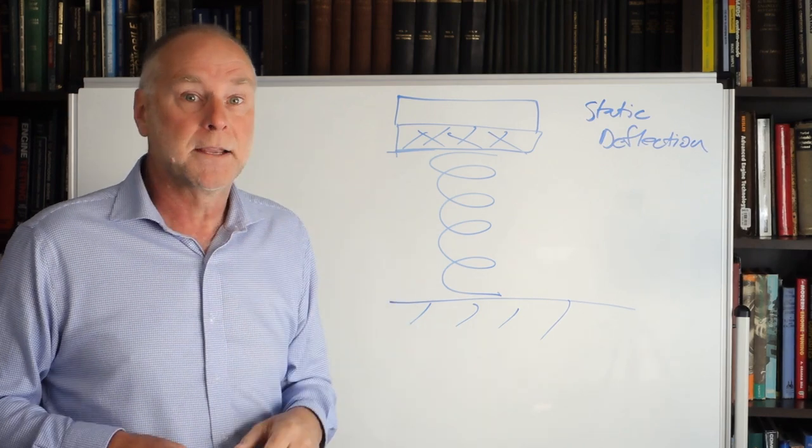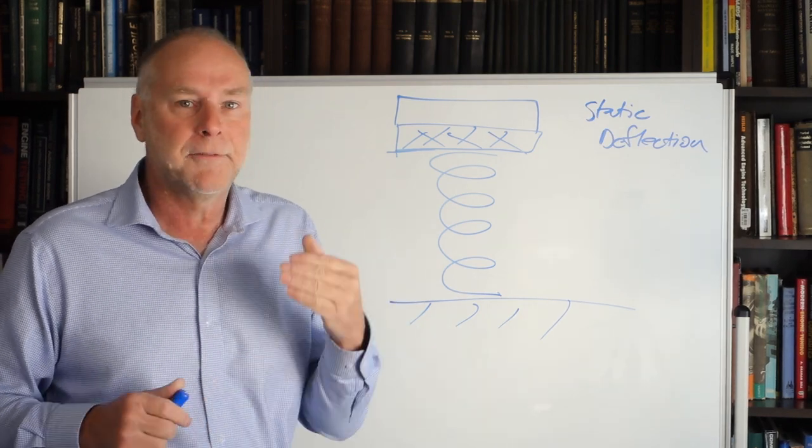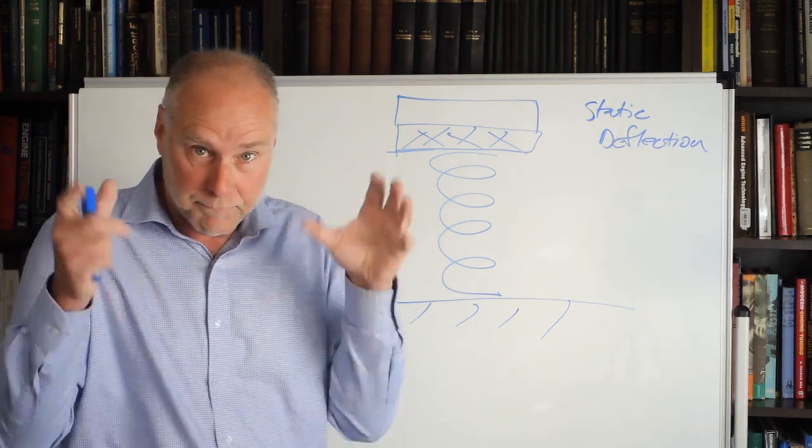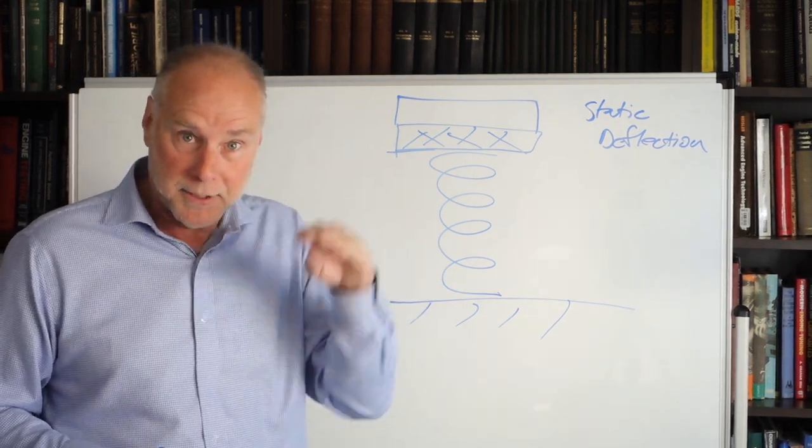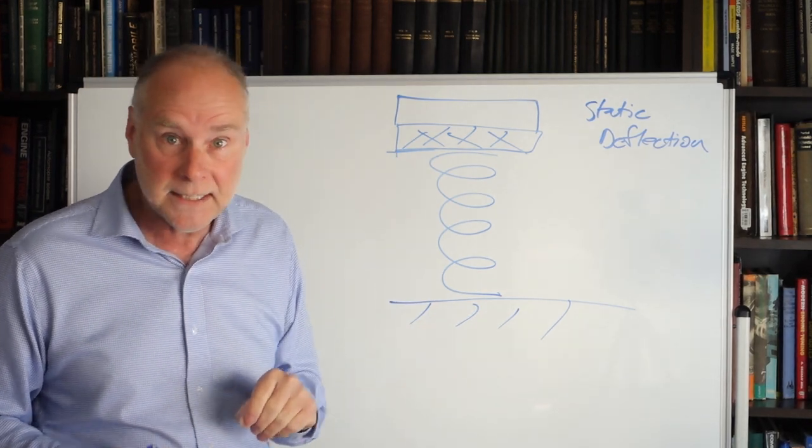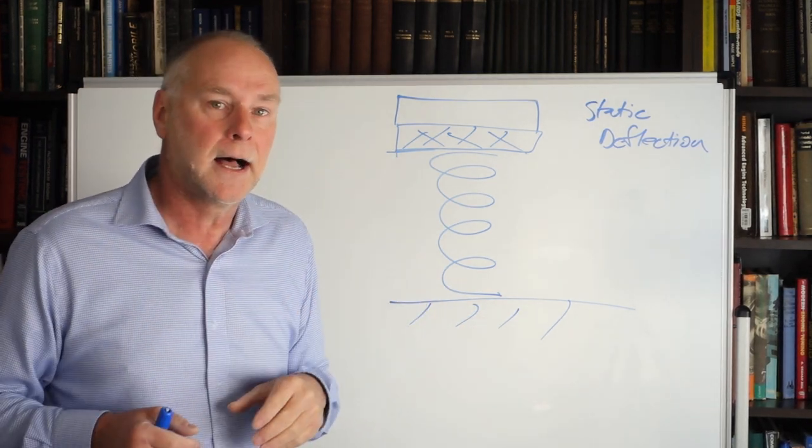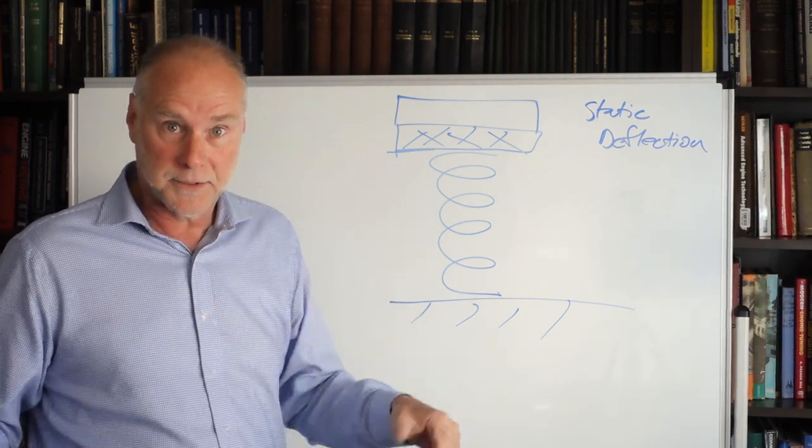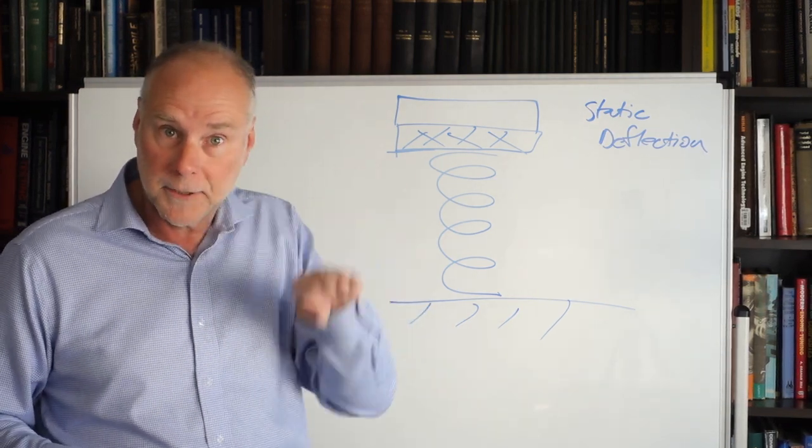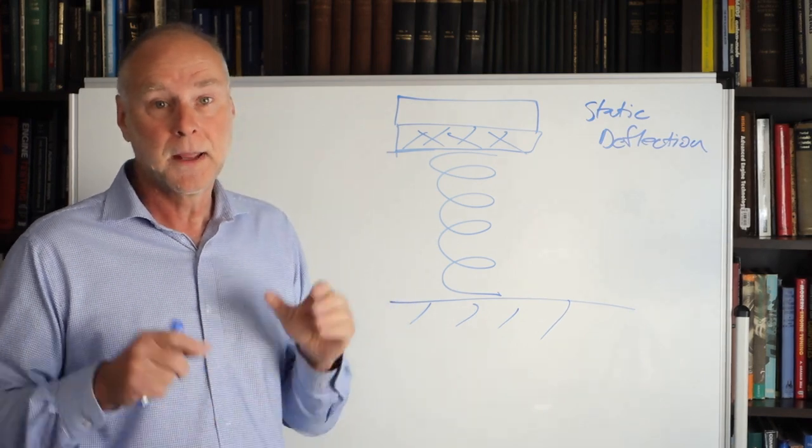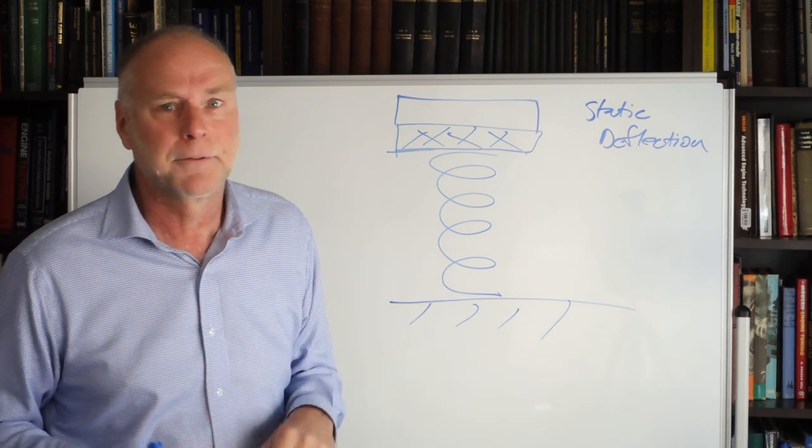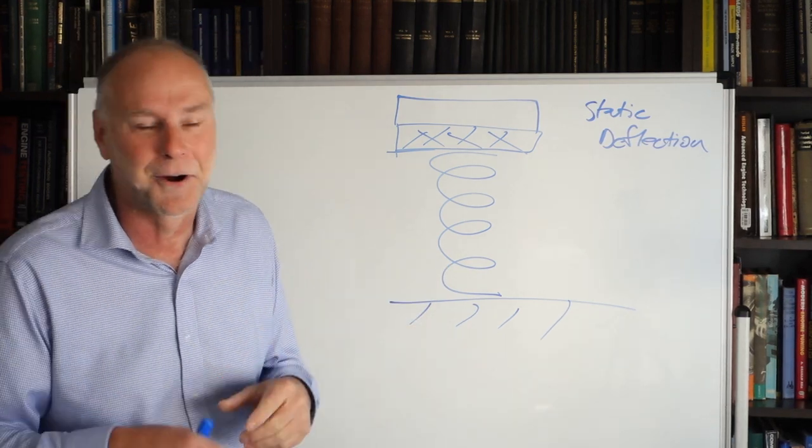So a sporting car might have a natural frequency of the suspension of two hertz. If you took the dampers out and bounced it up and down, it would bounce up and down twice a second. That's fairly stiff. A luxury car might have a natural frequency of only one hertz. You take the dampers out, you bounce it up and down, it goes up and down only once per second. Now, incidentally, the fact you take the dampers out doesn't change the natural frequency very much at all. It just makes it easy to measure and easy to describe.